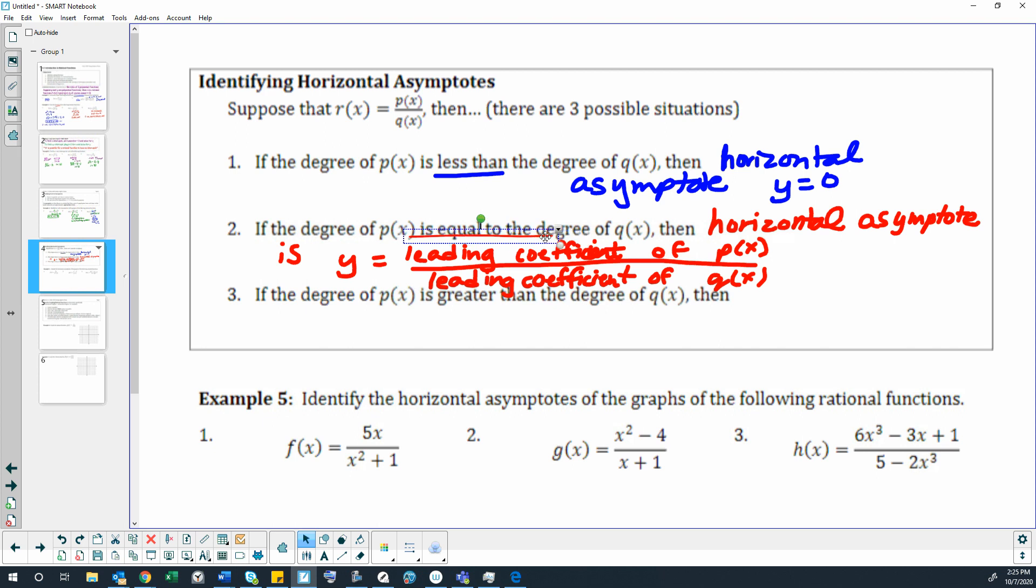So we have less than: the degree on the top is less than the degree on the bottom, horizontal at y equals 0. Equal degrees: equal highest exponent, we take those leading coefficients and take a fraction out of it, and that is our horizontal asymptote. The third situation is if we have the degree is greater in the numerator than it is in the denominator, then there is no horizontal asymptote. But there could be what we call an oblique or a diagonal asymptote, but we are not going to learn about that until section 3.